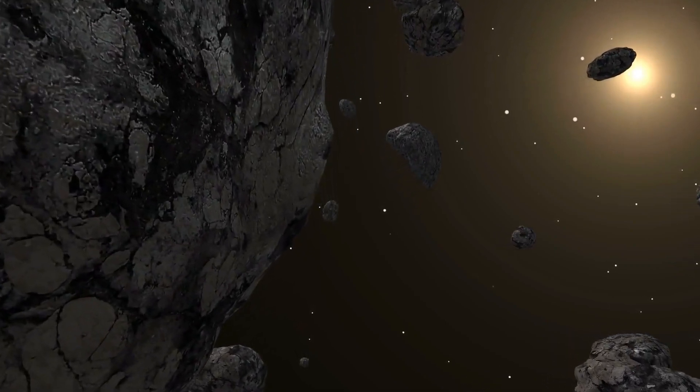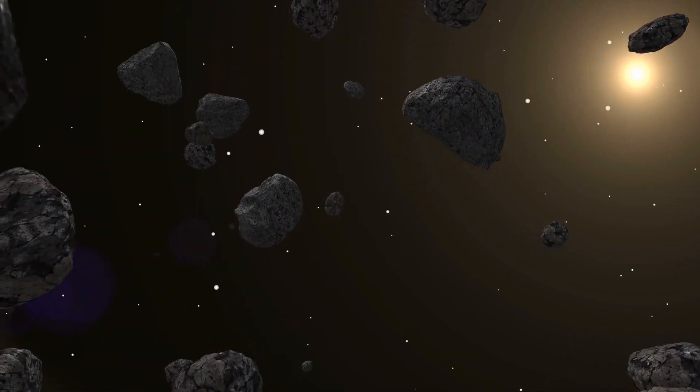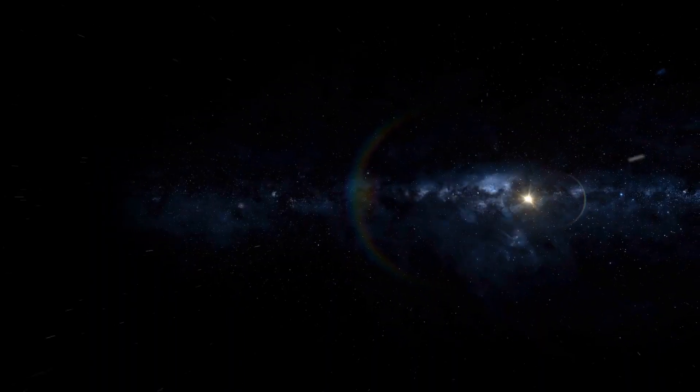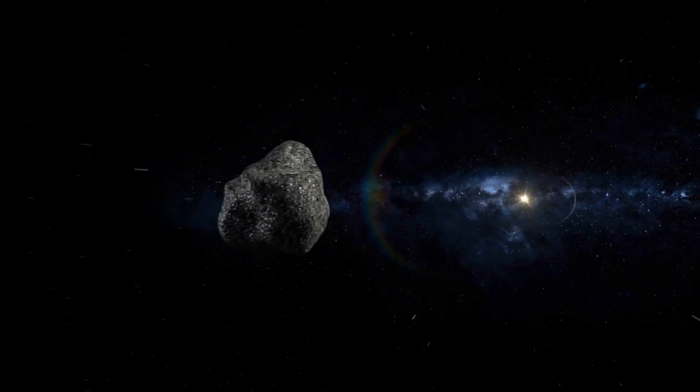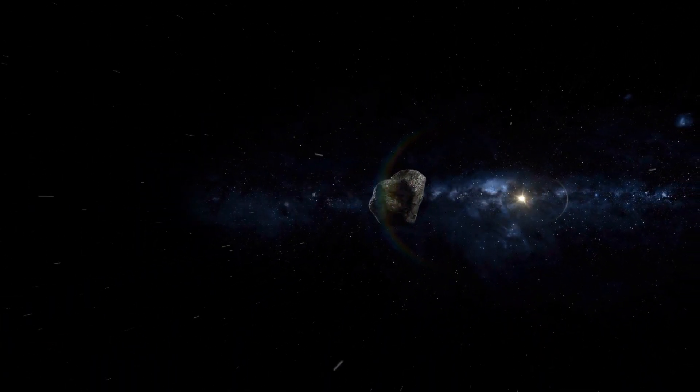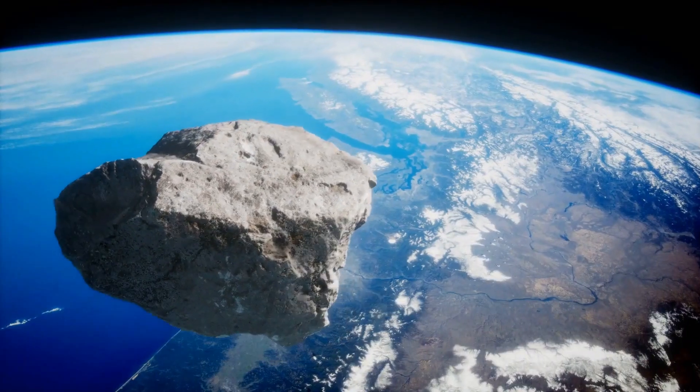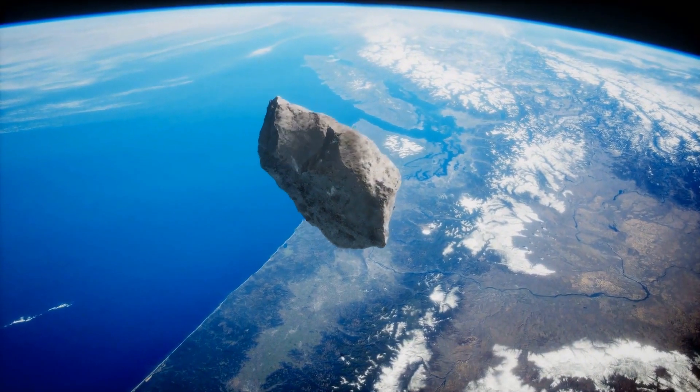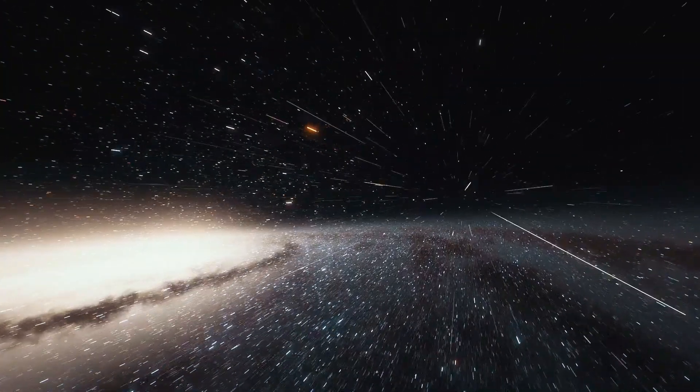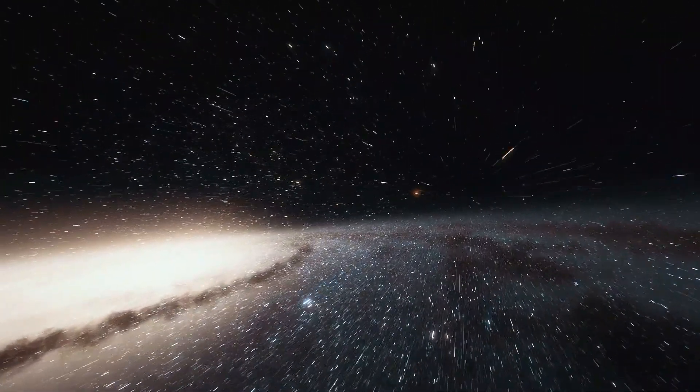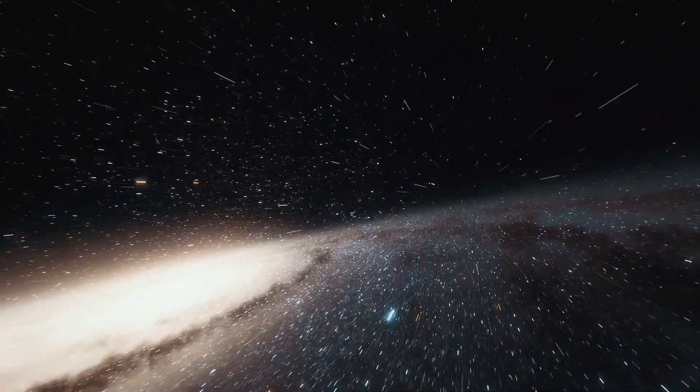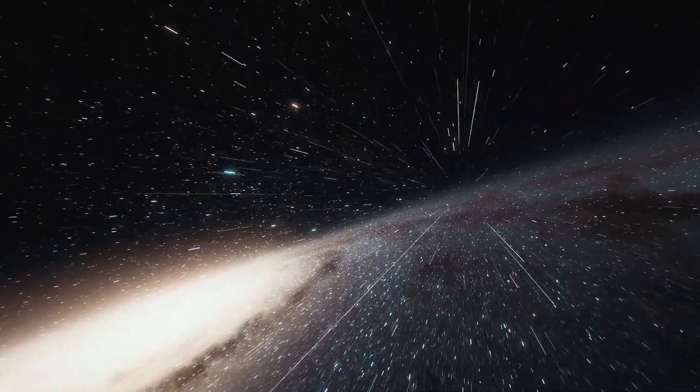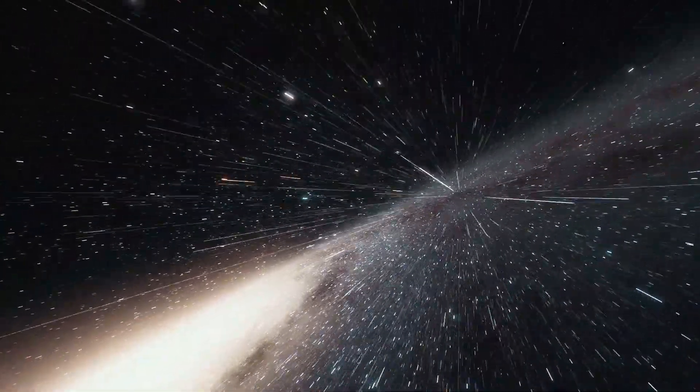The space agency has planned to take its asteroid-shattering spacecraft 7 million miles from Earth. The refrigerator-sized spacecraft will approach Didymos. However, Didymos will not be the primary target. NASA's DART mission will be targeting Didymun, which is big enough to demolish large cities.